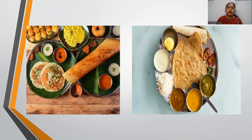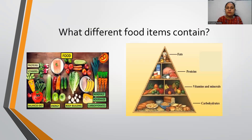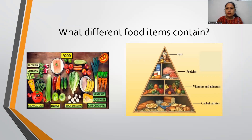So what does food consist of? What components are present in food? That is what we are going to learn in this chapter. Different food items are rich in different food components such as carbohydrates, proteins, fats, vitamins, minerals, dietary fibers, and water — these are the different food components present in food.